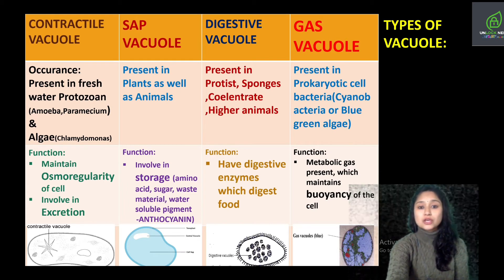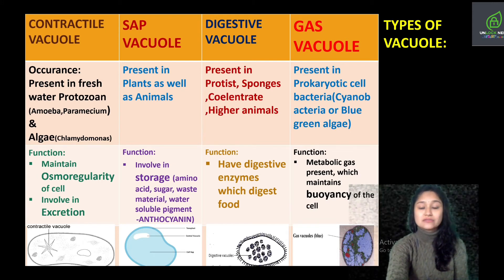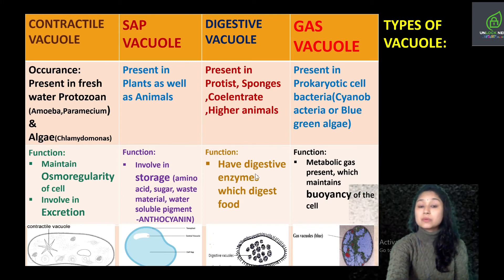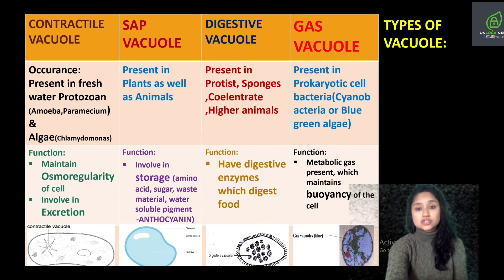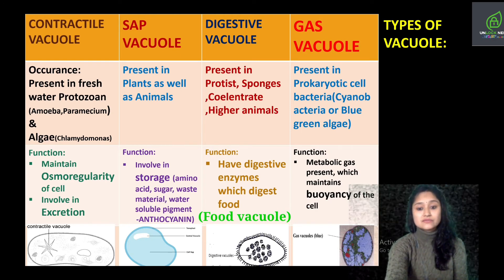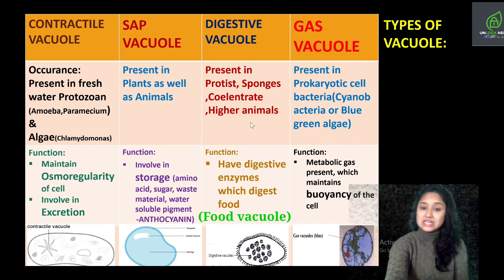The next type of vacuole is digestive vacuole. We had already read about digestive vacuoles in the lysosome topic. They are present in protists, sponges, coelenterates, and higher animals. Since digestive vacuoles contain digestive enzymes, they are basically involved in the digestion and breakdown of food. That is the reason they are also considered to be food vacuoles.